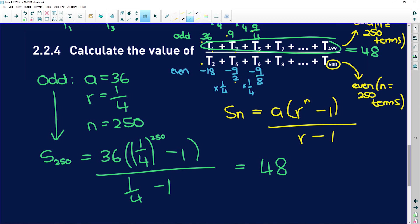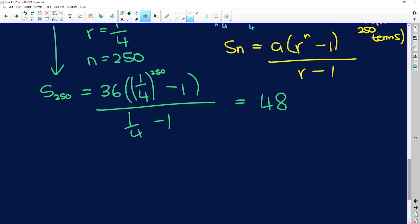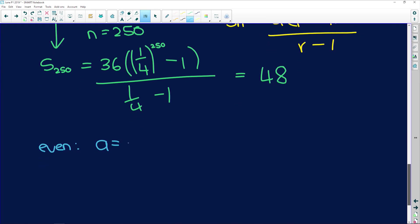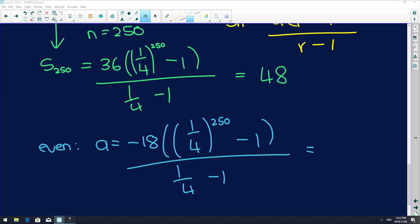Now, if I do the same thing for the even terms, which are the denominator's terms, a is equal to, remember, now we're starting at t2. So a is equal to negative 18. And that goes into a quarter to the power of 250, because remember, half of the 500 terms are also in the denominator, divided by a quarter minus 1.